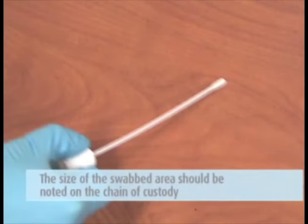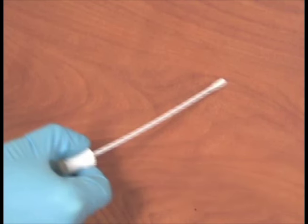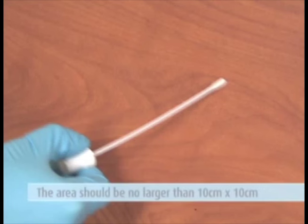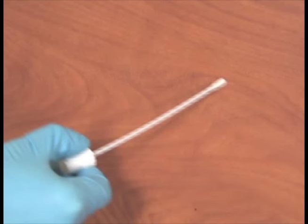The size of the swabbed area should be noted on the chain of custody. If a viable analysis is requested, a measure of CFUs per square centimeter can be obtained from this information. The area should be no larger than 10 centimeters by 10 centimeters, or roughly 4 inches by 4 inches, as too large an area may provide inaccurate data.